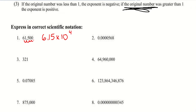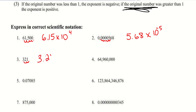On the next one, the decimal point is currently here and we want it to be here, so we need to move it 5 spots. Remember, this is a smaller number than it's normally going to be, so to put it back into standard form we would need to move the decimal point to the left — making it 5.68 times 10 to the negative 5. For the next one, the decimal point is currently after the 1 and we need to move 2 spots. So this is 3.21 times 10 to the positive 2, because this number is bigger than 1.